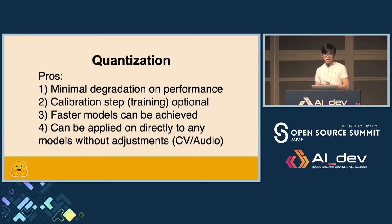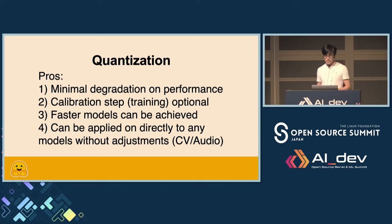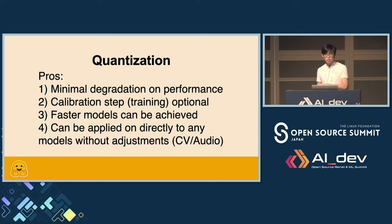Quantization has many pros: minimal degradation in performance, and the calibration step is optional. Many quantization methods improve on linear quantization by using a calibration step — basically using datasets to minimize quantization error and improve LLM output quality. With quantized models, we can actually have faster models. And linear quantization can be applied directly on any model without adjustment — not only LLMs, but also computer vision models, audio models, and diffusion models.